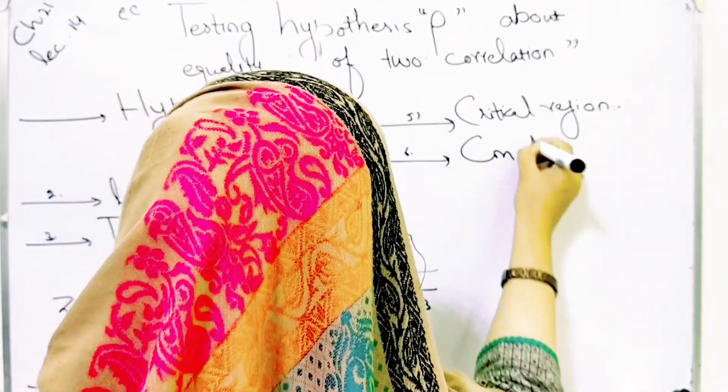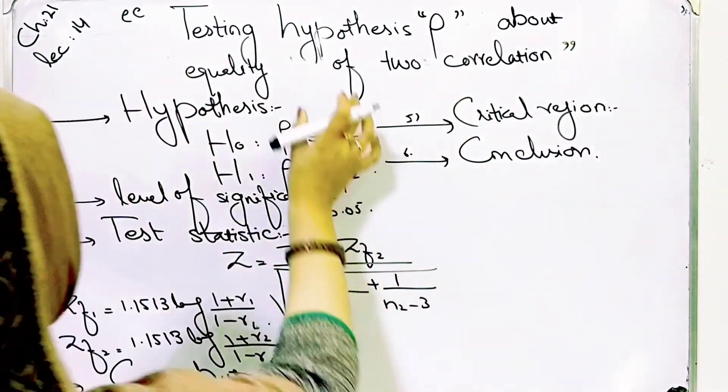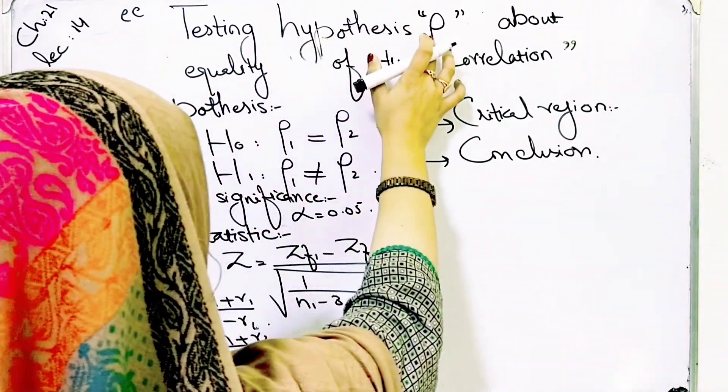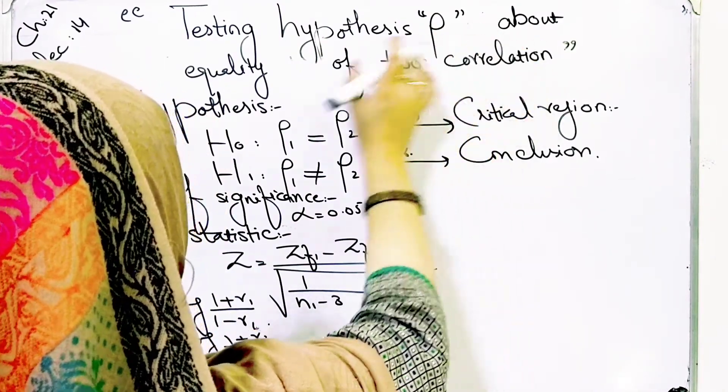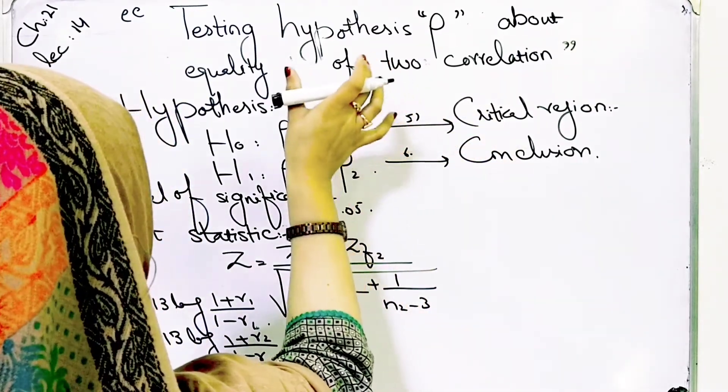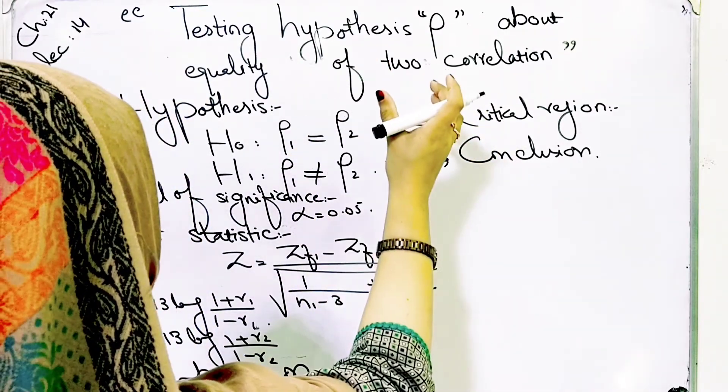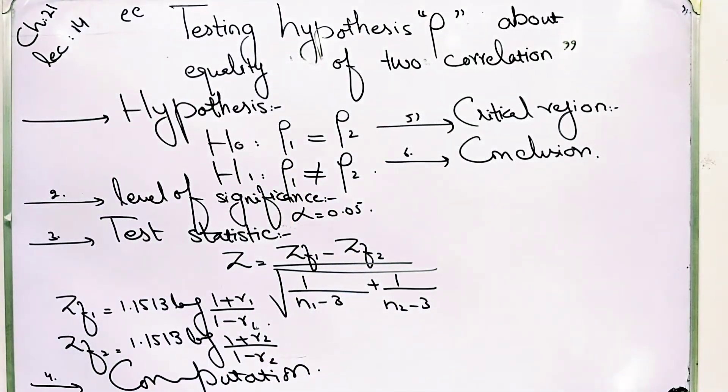Then we have to do conclusion as well. These are the six steps following when the situation is testing hypothesis rho about equality of two correlations. I have told you we will have six steps in the general procedure. We will explain in the next video how to solve it.